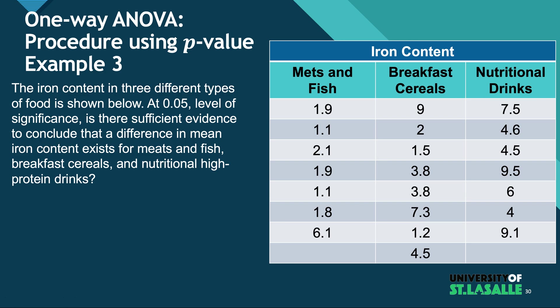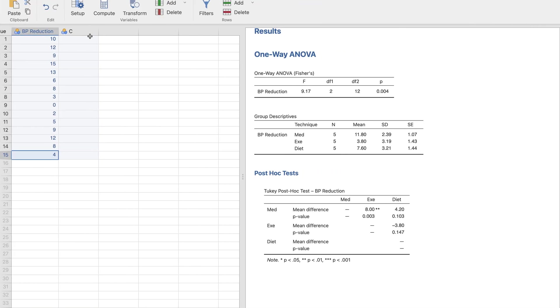The null hypothesis is: there is no significant difference between the three different types of food — meats and fish, breakfast cereals, and nutritional drinks. The alternative hypothesis is that there exists at least one significant difference between them. The alpha level is 0.05, and we'll use ANOVA in Jamovi for this.